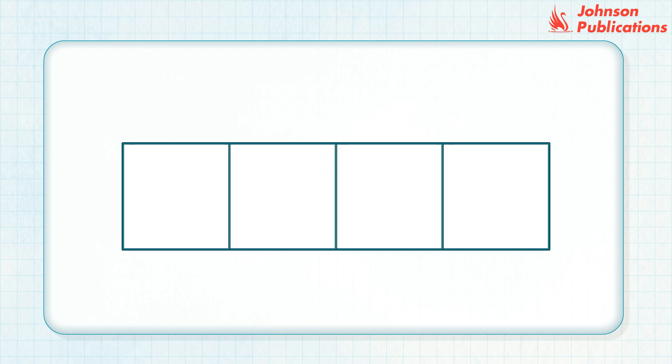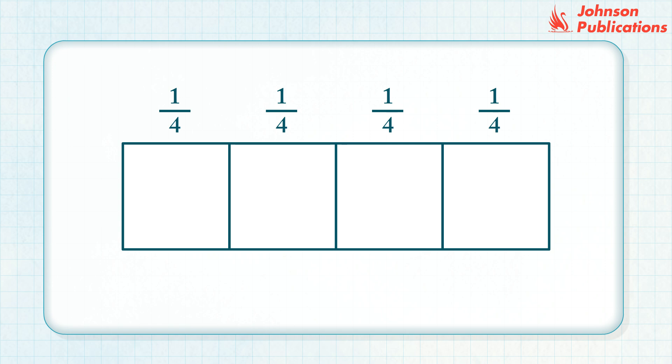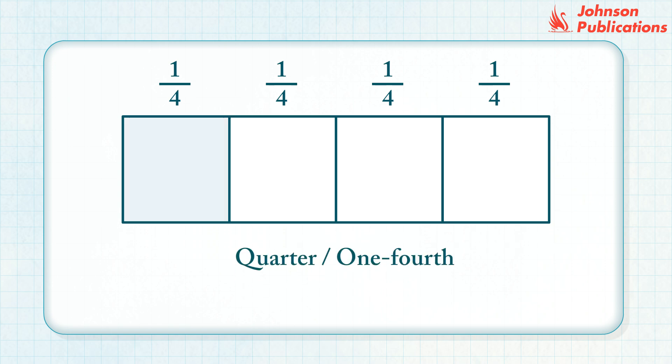Now look at the given figure. The shape is divided into four equal parts. Each part is called a quarter or one fourth. The one fourth part is shaded blue. The fraction is written like this and is read as one by four.